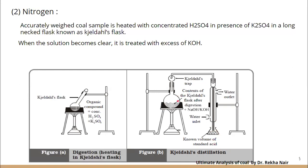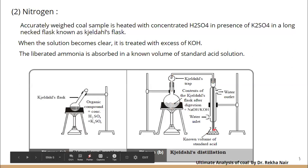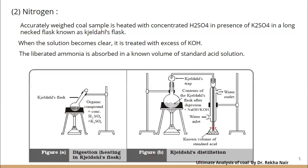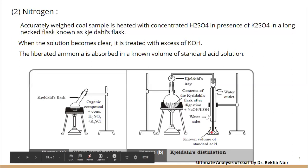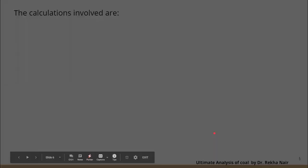We take the coal sample, treat it with concentrated H2SO4 and K2SO4, and the content is digested. After digestion it is treated with excess KOH or sodium hydroxide. The product formed is ammonia. The ammonia liberated in the Kjeldahl flask is condensed and absorbed in a known volume of a standard acid solution. By titrating this acid with a known amount of basic solution, we can calculate how much ammonia has been absorbed.